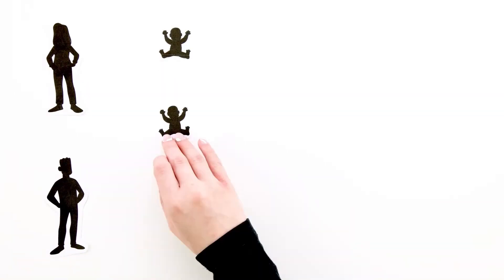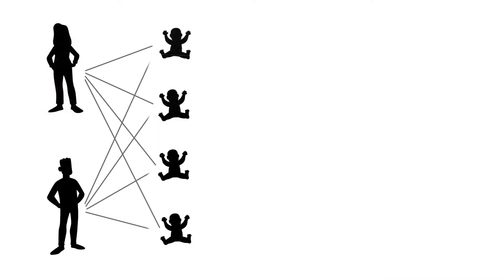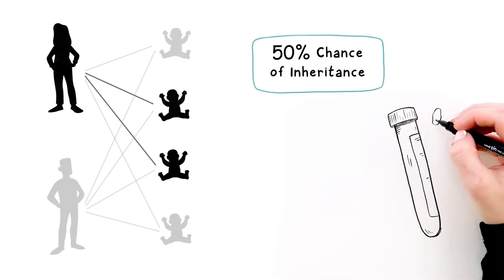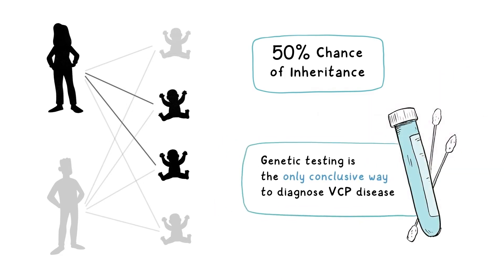VCP disease is autosomal dominant and adult onset, which means that people like Mia have a 50% chance of inheriting the gene mutation and developing symptoms in adulthood. A genetic test is the only conclusive way to diagnose VCP disease.